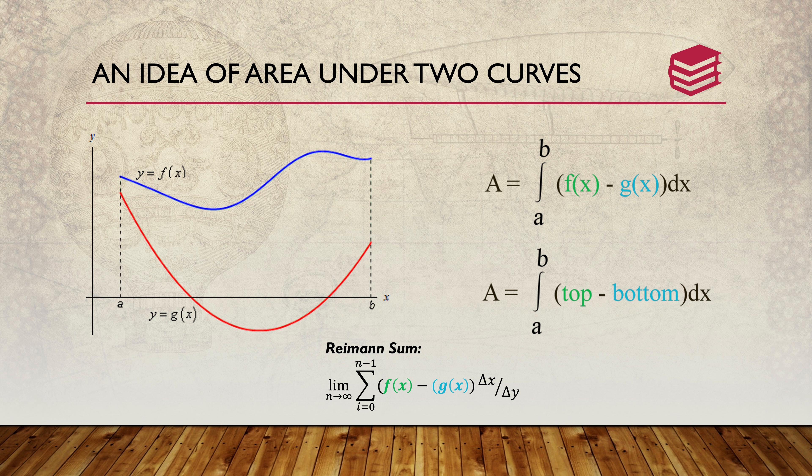The same thing would happen if you had equations that overlap one another — you go from left to right. At the bottom you can see there is a Riemann sum of f(x) minus g(x) with delta x or delta y, depending on the orientation with the axis.